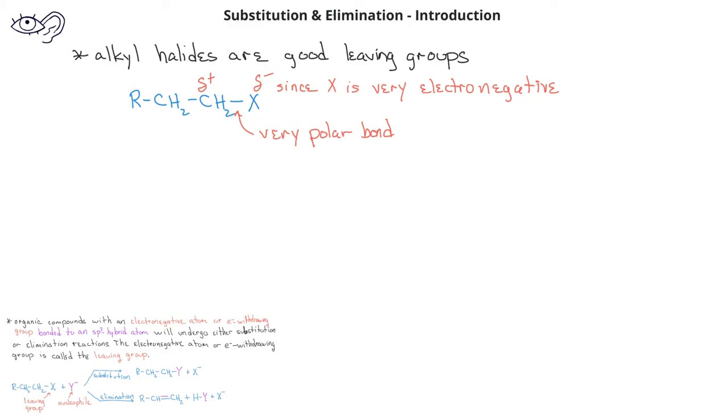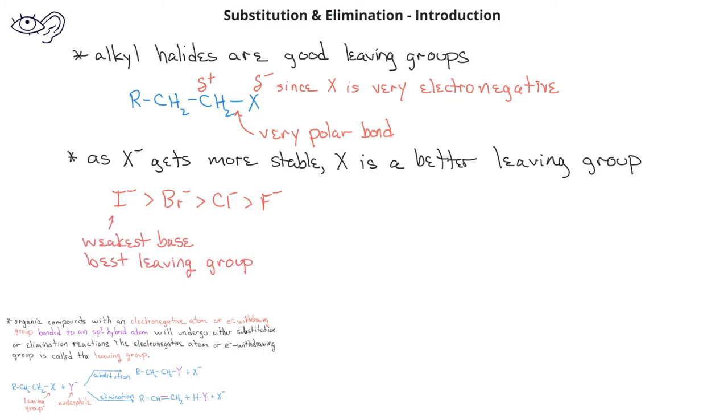As the halogen anion gets more stable, the leaving group is a better leaving group. For the halogens, we see that the iodide ion is the most stable ion since it's the weakest base. Therefore, iodide is a better leaving group than bromide, which is a better leaving group than chloride, which is a better leaving group than the fluoride ion.